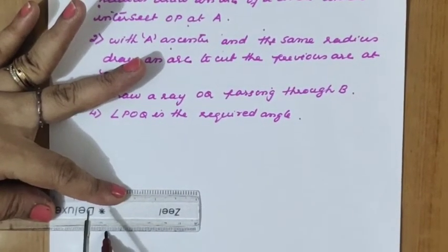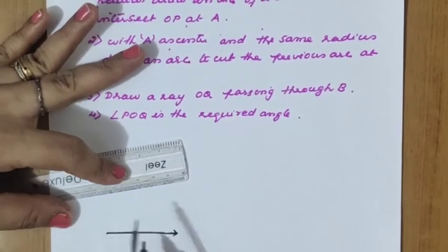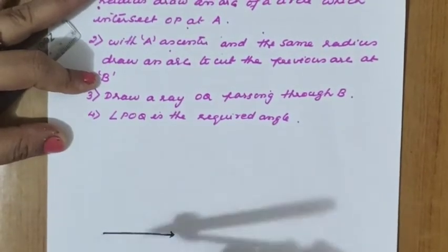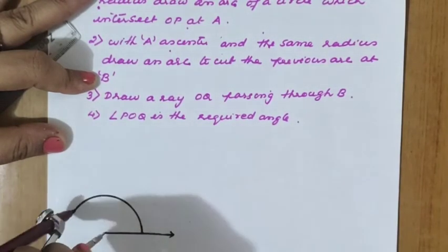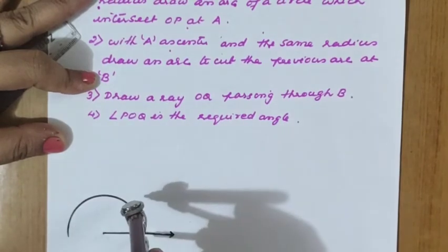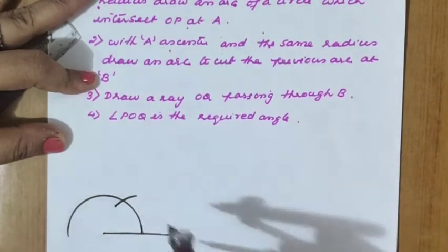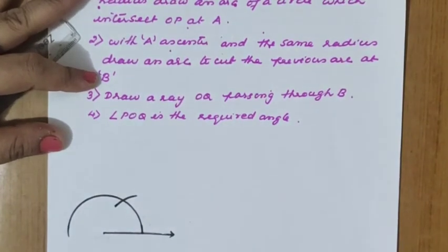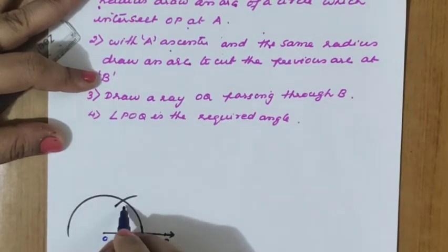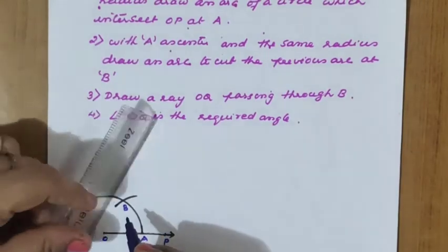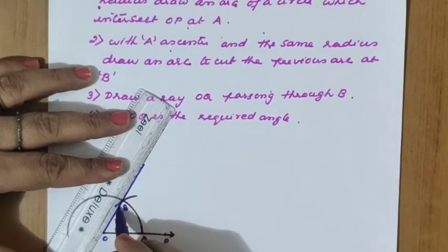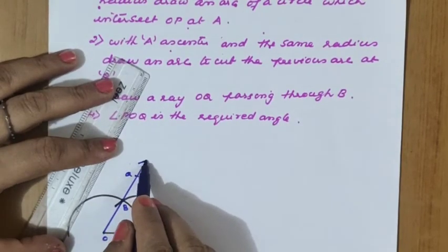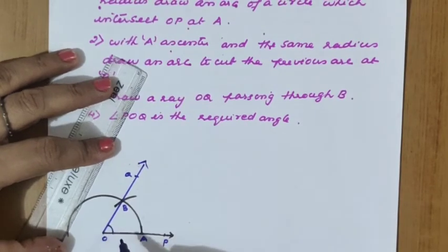Now the actual construction: a ray OP is given. With O as center, draw a semicircle — from this we cut one arc. We mark points O, P, A, B. Through B we draw a ray, which is OQ. So angle POQ equals 60 degrees.